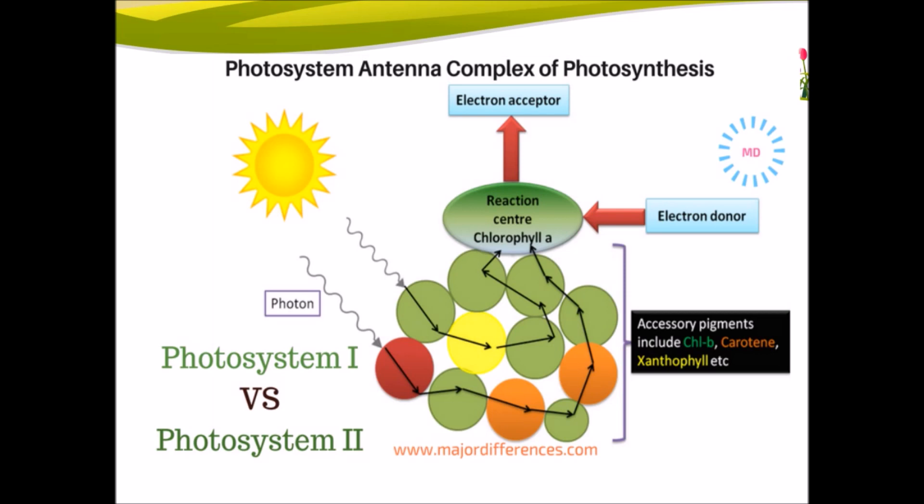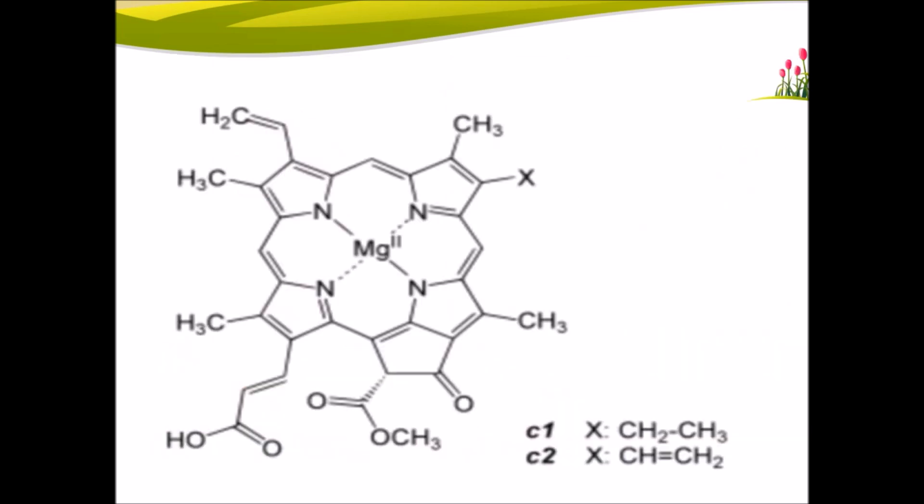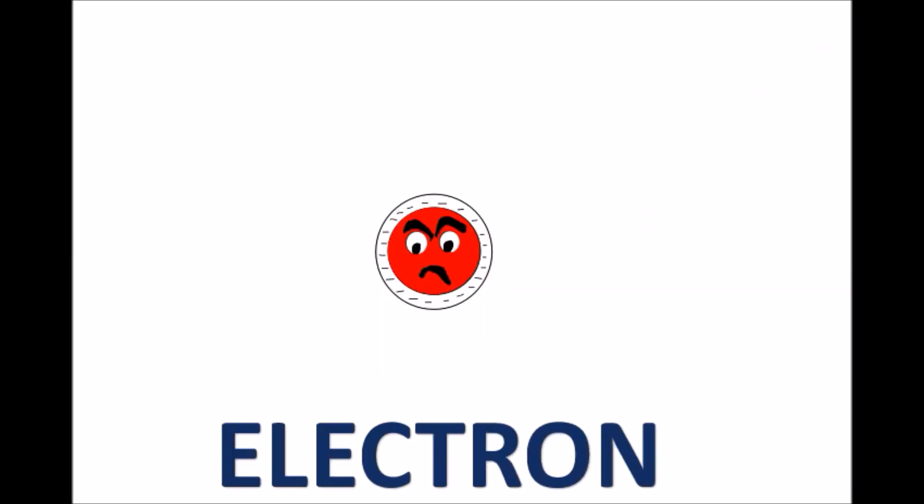Here is the photo antenna complex of photosynthesis. It is the magnesium porphyrin in chloroplast. Remember, this electron character plays a major role in our entire video.